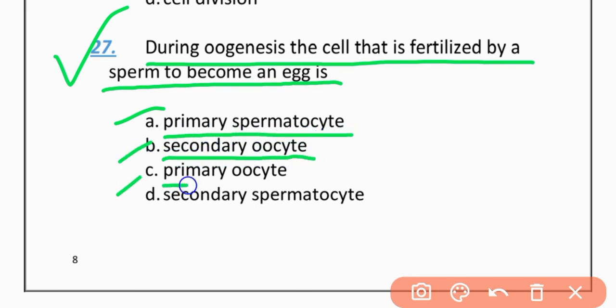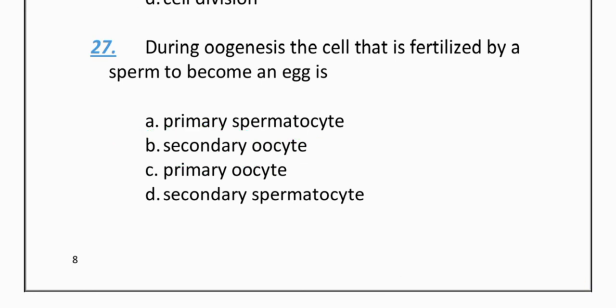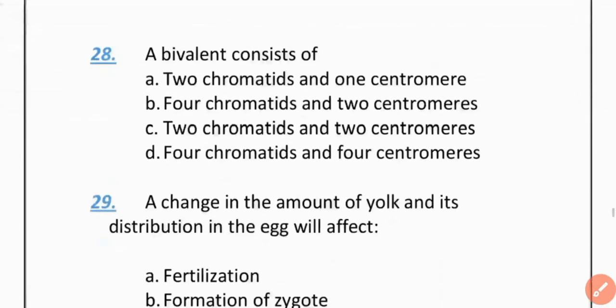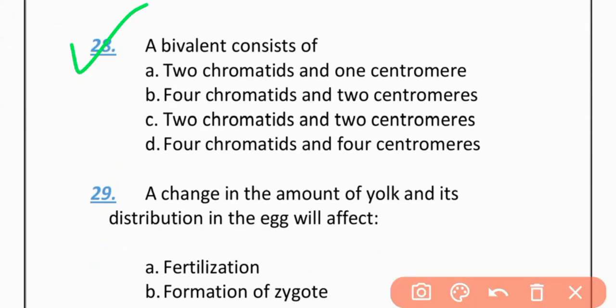MCQ 27: During oogenesis, which cell is fertilized by sperm to become a zygote? Options: Primary spermatocyte, Secondary oocyte, Primary oocyte, Secondary spermatocyte. The correct option is B — Secondary oocyte.